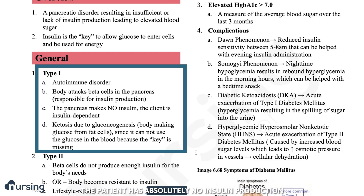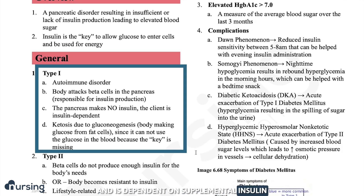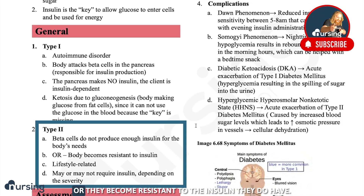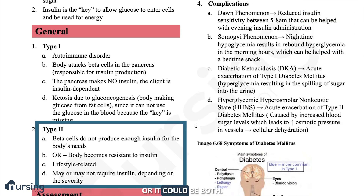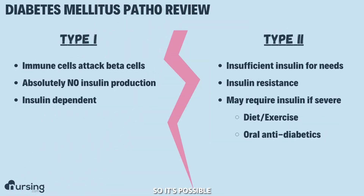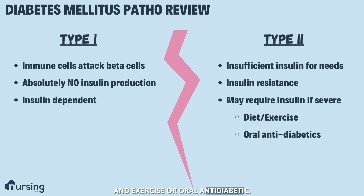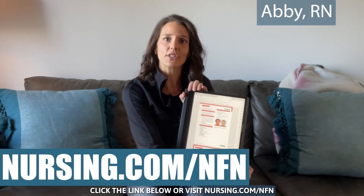In type 2 diabetes, they either don't make enough insulin to meet their body's needs, or they've become resistant to the insulin they do have, or it could be both. It's possible that these patients need insulin if it's severe enough, but usually they can be managed with either diet and exercise or oral antidiabetics.